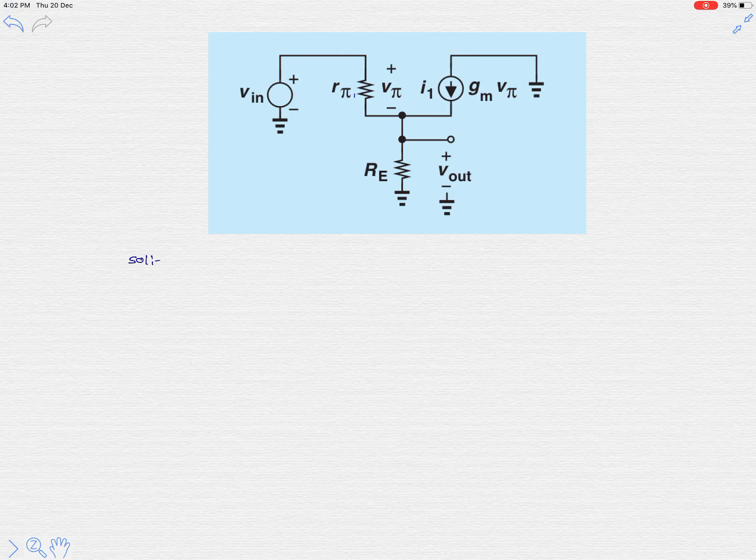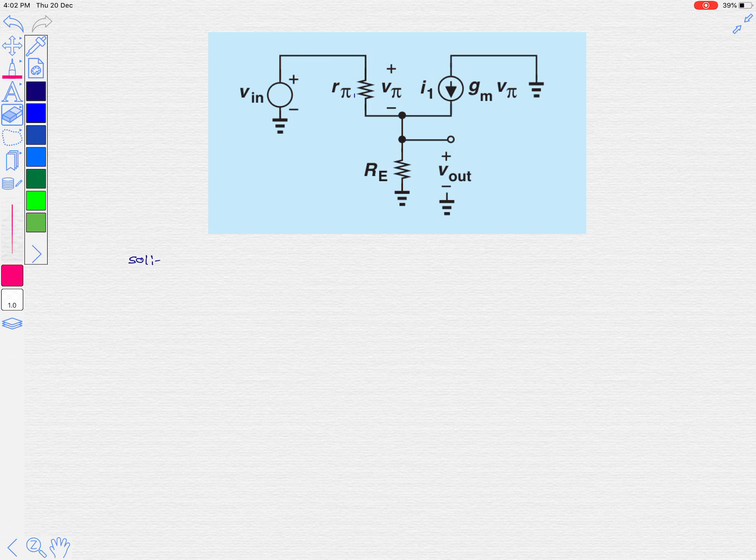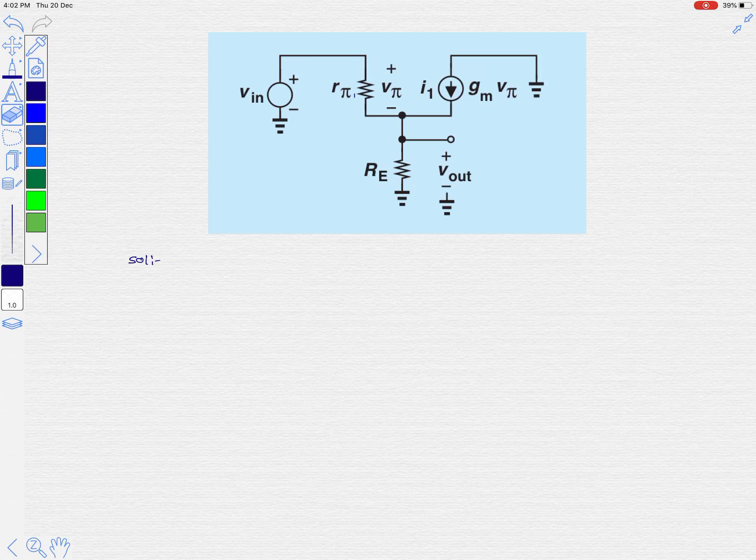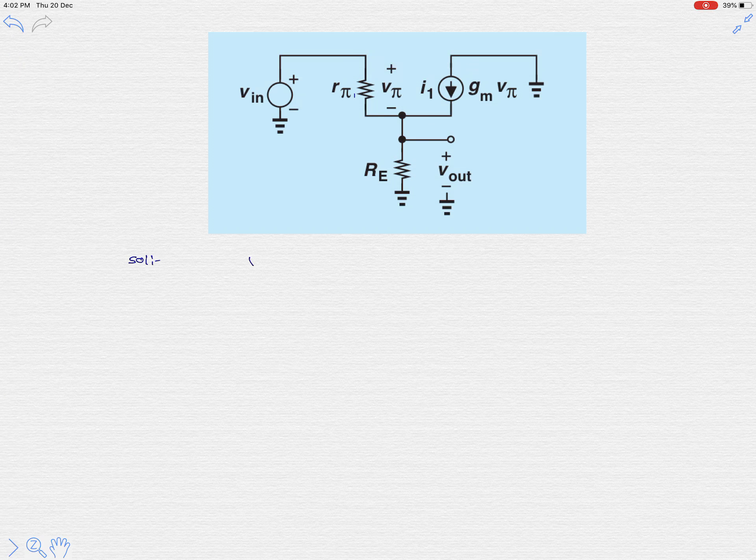Hi friends, let's solve this basic amplifier topology problem. It is asking to calculate the gain of this amplifier. We know that voltage gain is defined as V output over V input.